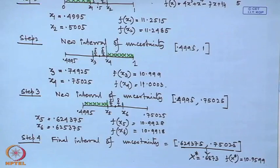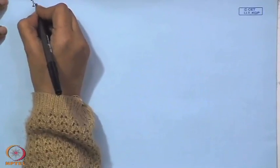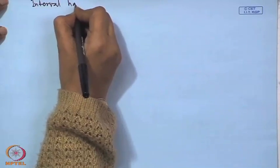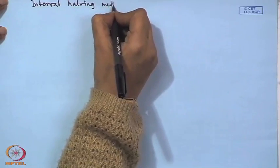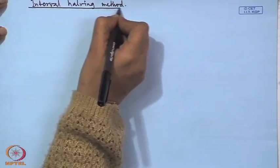Performing more experiments would yield a better result. Another well-known searching technique for solving unconstrained non-linear optimization problems is the interval halving method, also known as the bisection method. This is the same method used in numerical analysis.